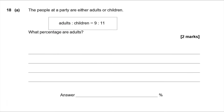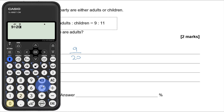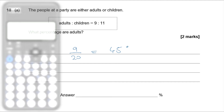Question 18a — the ratio of adults to children at a party is 9 to 11. What percentage are adults? In total there are 9 + 11 = 20 parts, and adults make up 9 out of 20. As a percentage: 9 ÷ 20 × 100 = 45%.